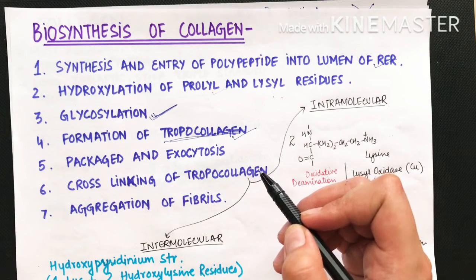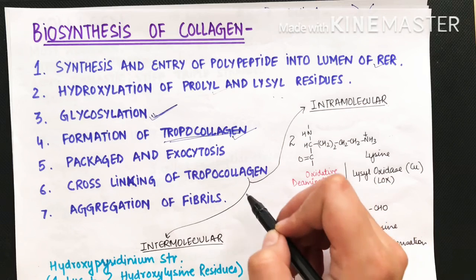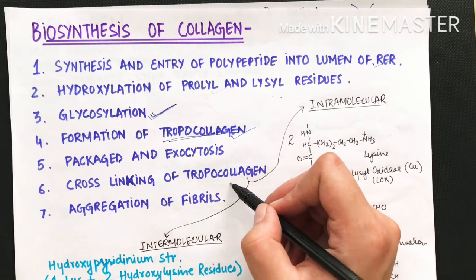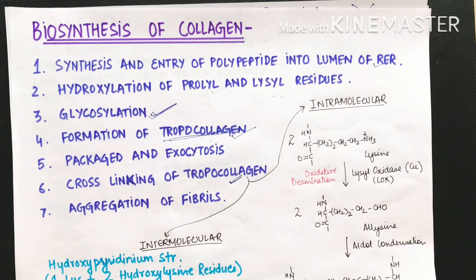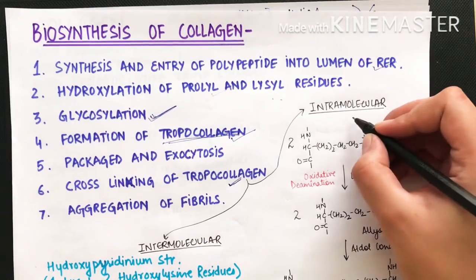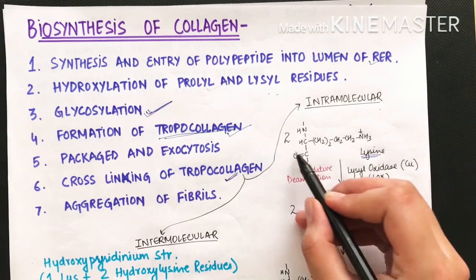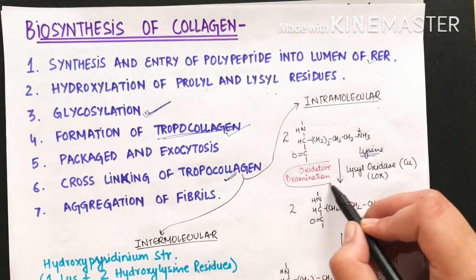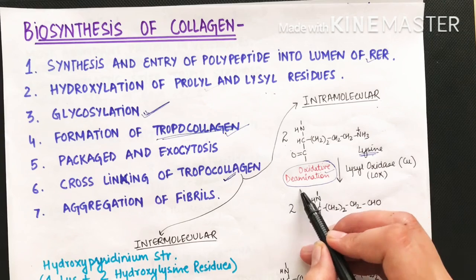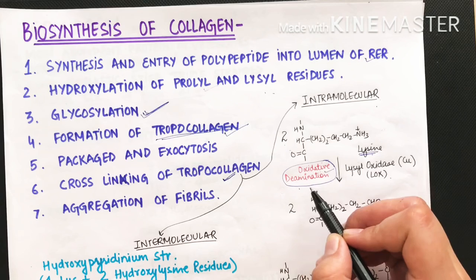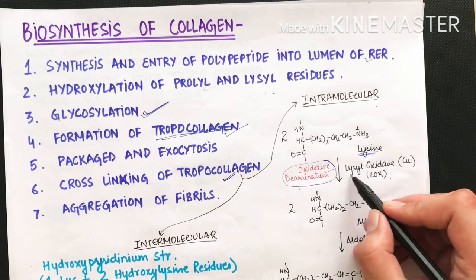Tropocollagen is then packed into vesicles and secreted out. Once tropocollagen is released, cross-linking starts. First, intramolecular bonding within tropocollagen occurs: lysine undergoes oxidative deamination — oxygen is added and NH4+ is released — via the enzyme lysyl oxidase, which is a copper-dependent enzyme.